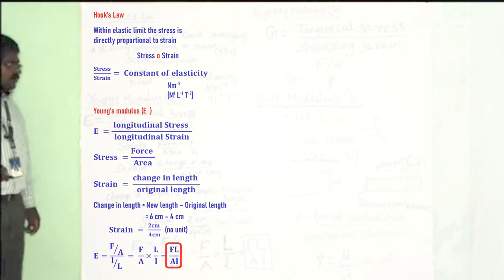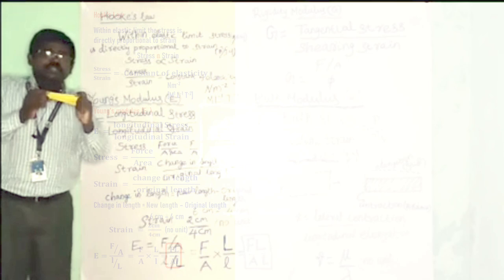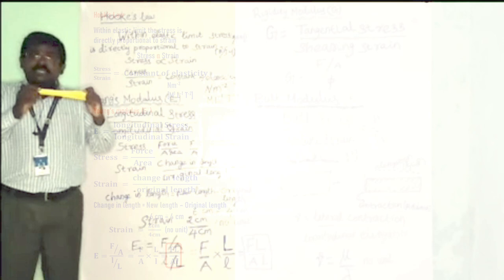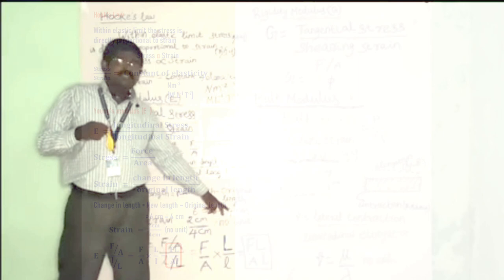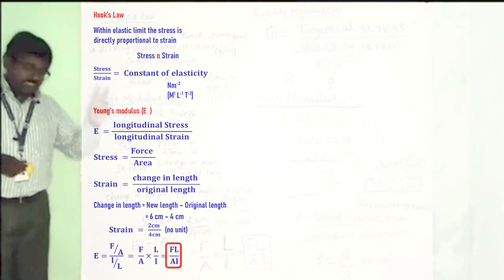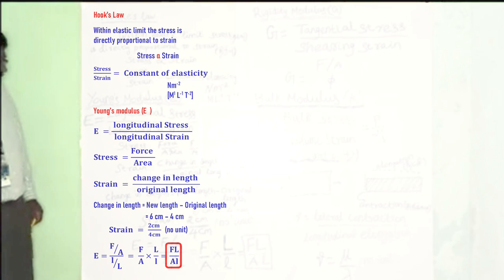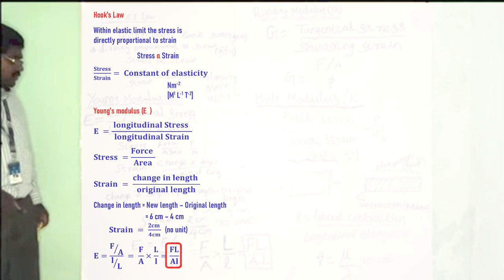Change in length is new length minus original length. For example, take a material that has 4 cm in length. Now I apply stress and it becomes 6 cm. So the new length is 6 cm and the original length is 4 cm. The change in length is 6 cm minus 4 cm, which is 2 cm. So the strain is 2 by 4. It has no unit because cm and cm cancel out — strain does not have any unit.